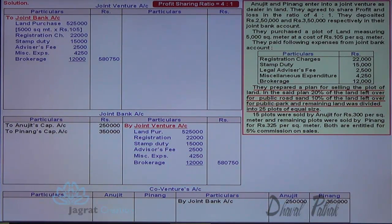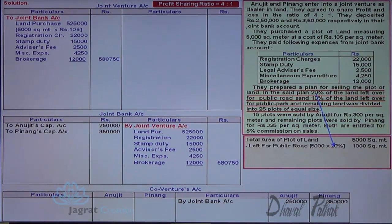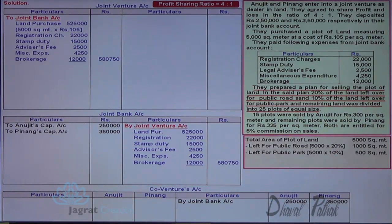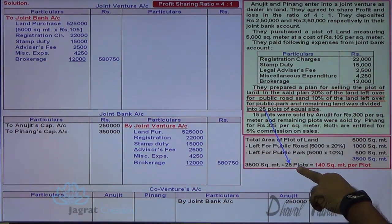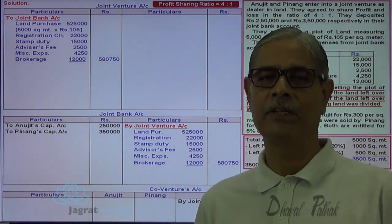Let me identify the number of plots being prepared with a working note. Total area of land purchased is 5,000 square meters. 20 percent is marked for public roads — that is 1,000 square meters. 10 percent is for public park — that is 500 square meters. The available land for sale is 3,500 square meters, divided into 25 plots. So 3,500 divided by 25 — every plot is made of 140 square meters. This is an important calculation that students should notice.